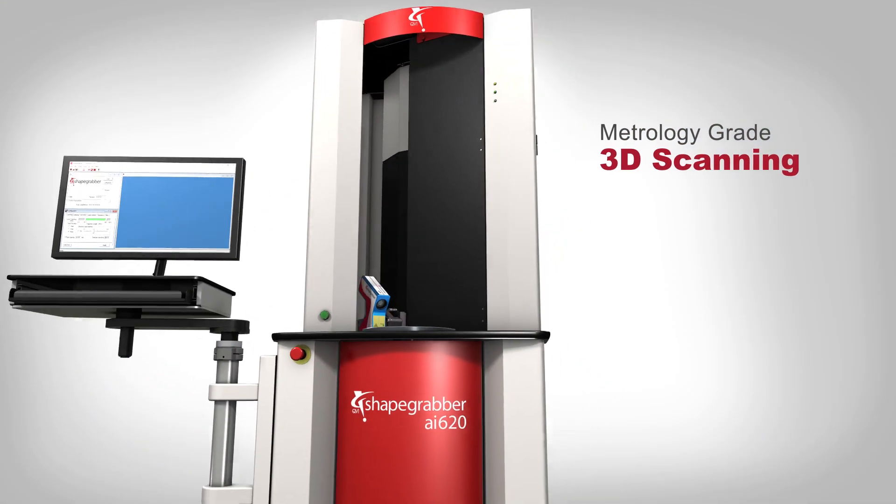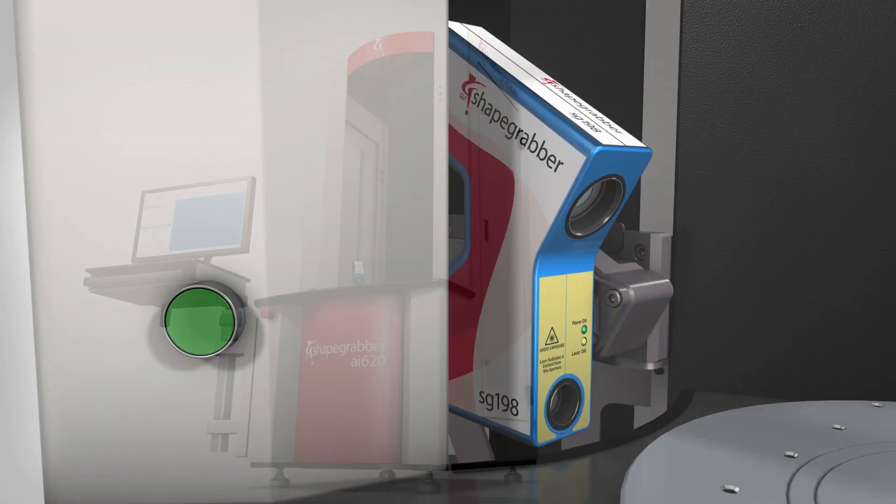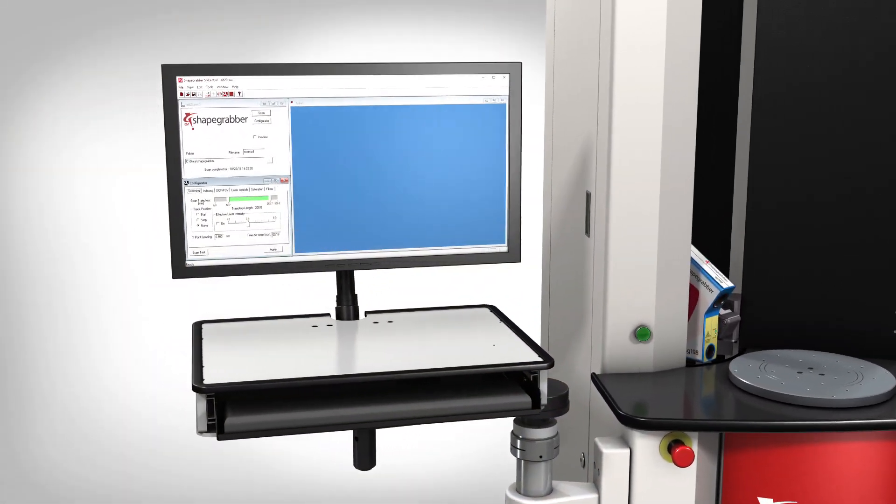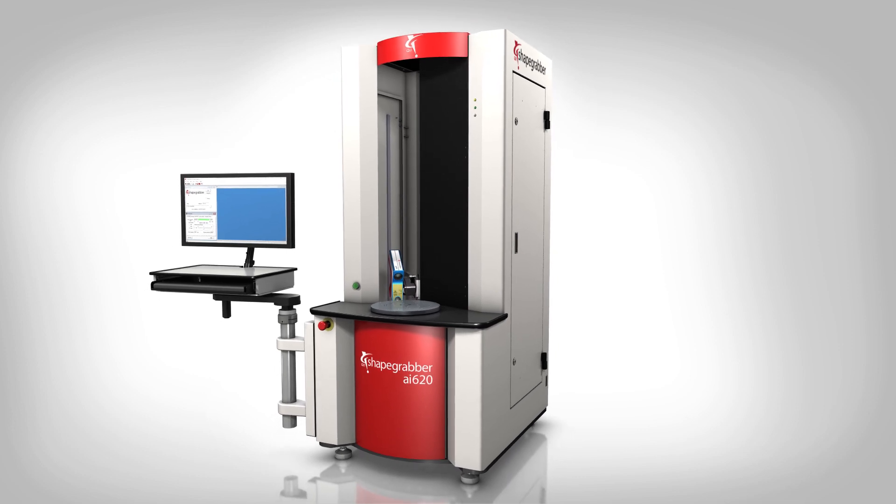ShapeGrabber AI620 is completely self-contained with all critical components, electronics, optics, controllers and processor integrated in an ergonomic space-saving package.